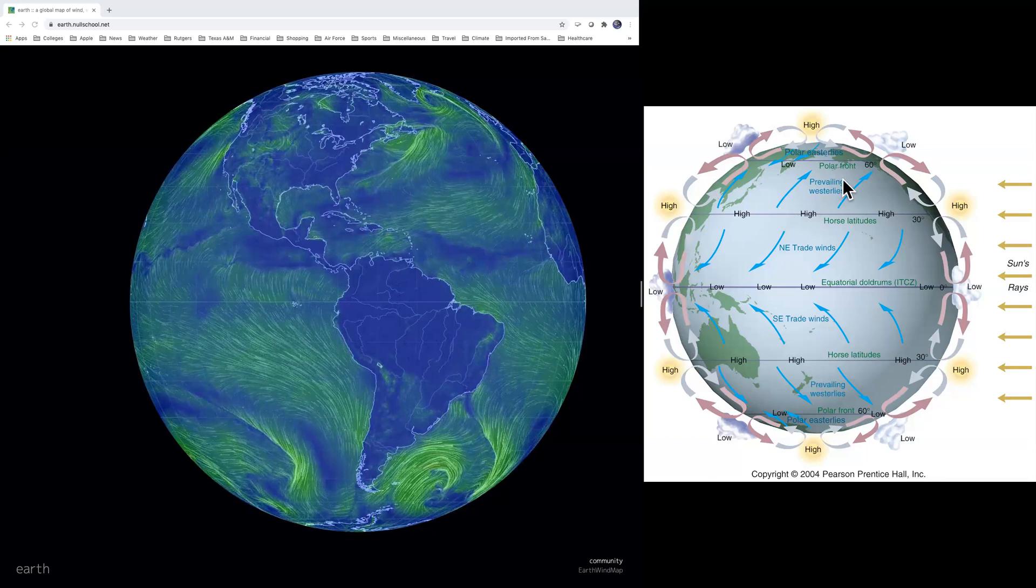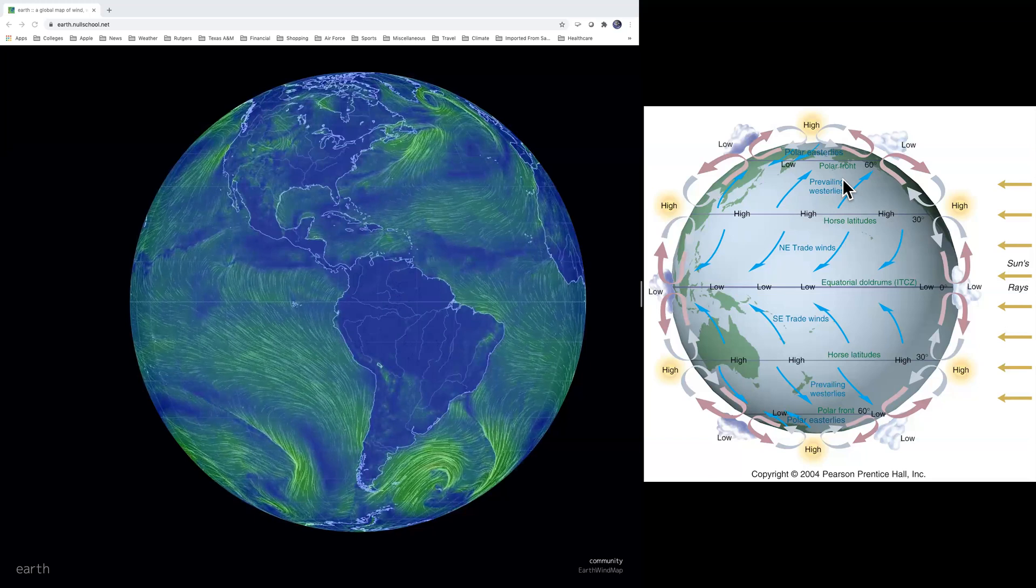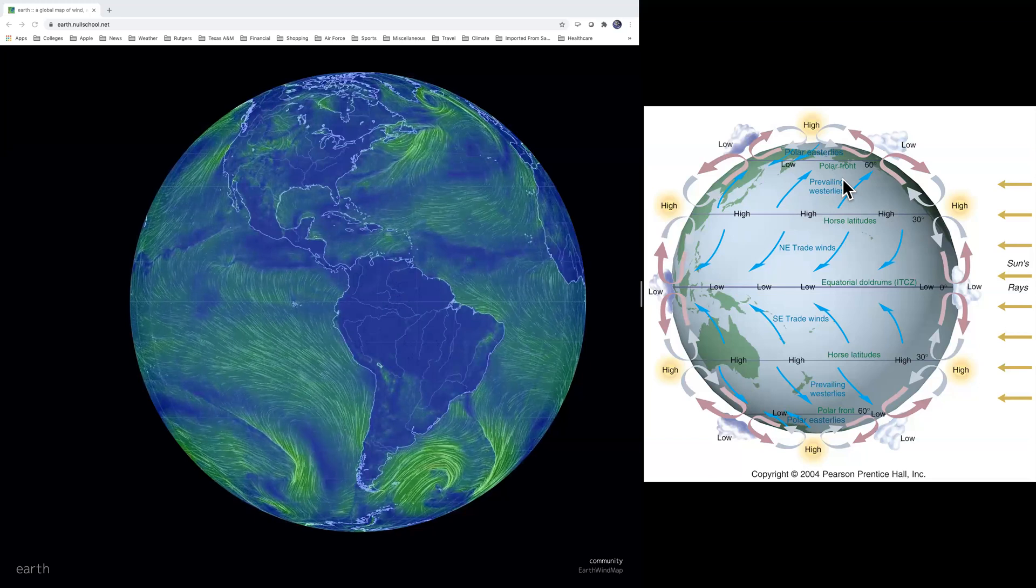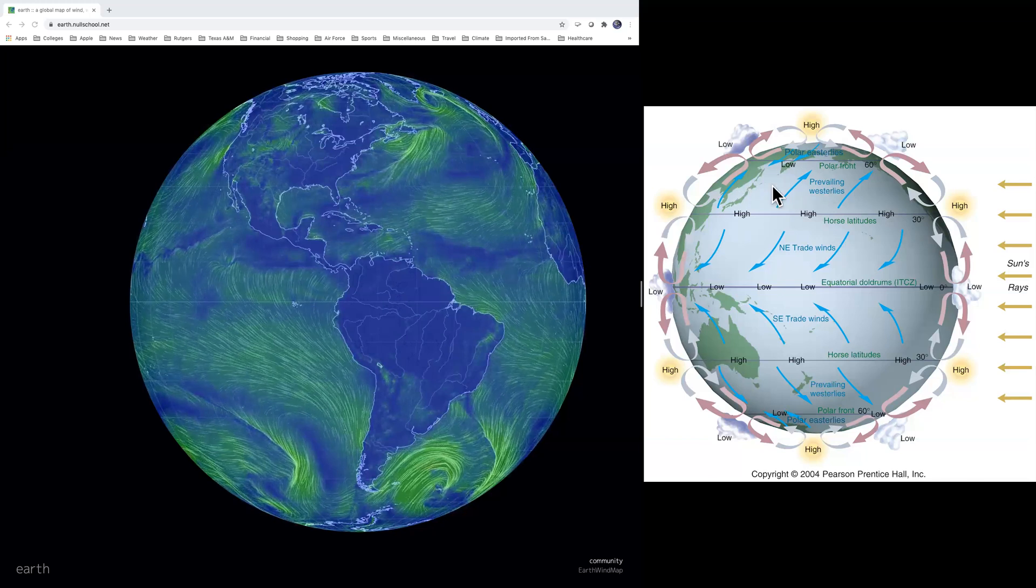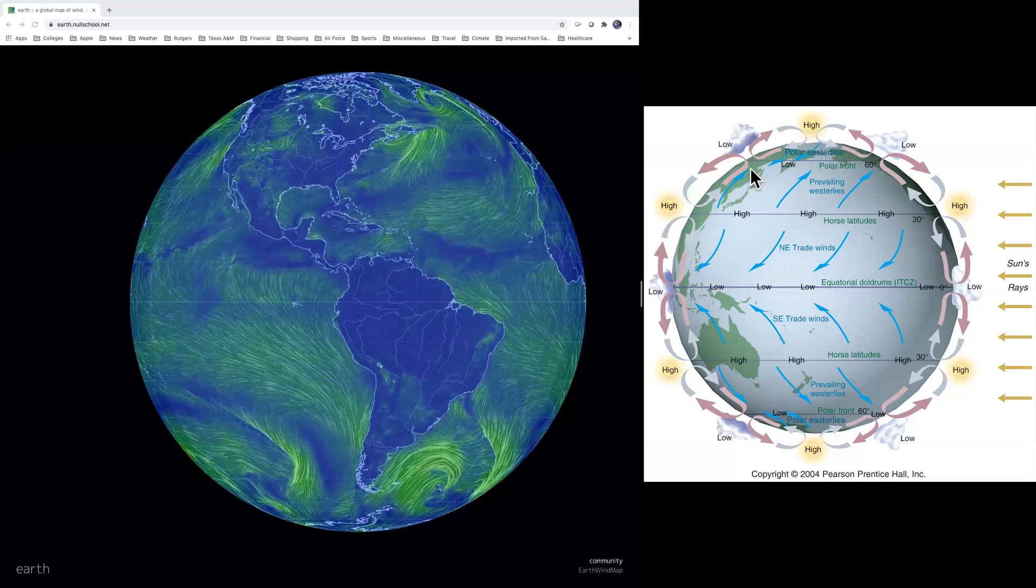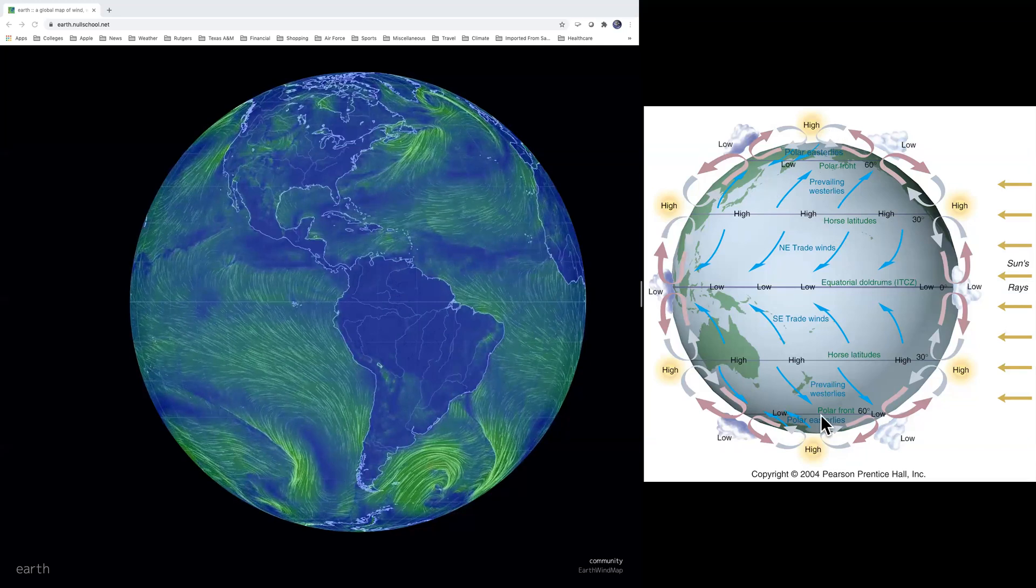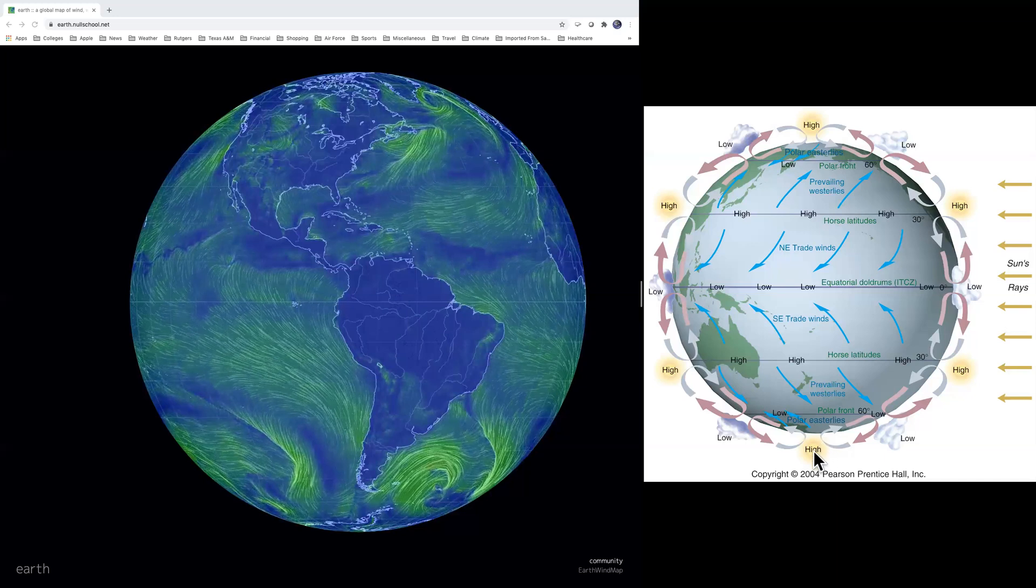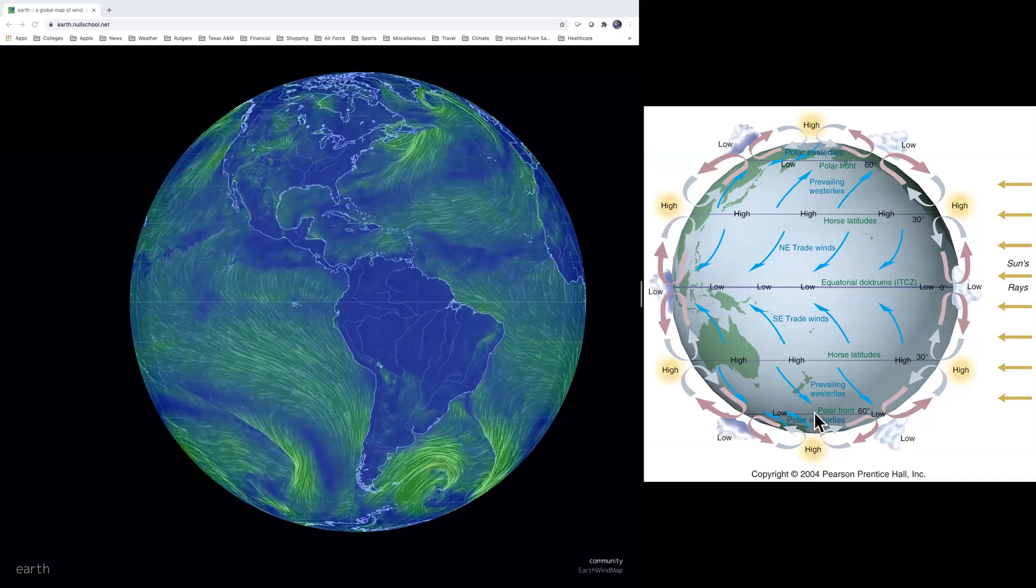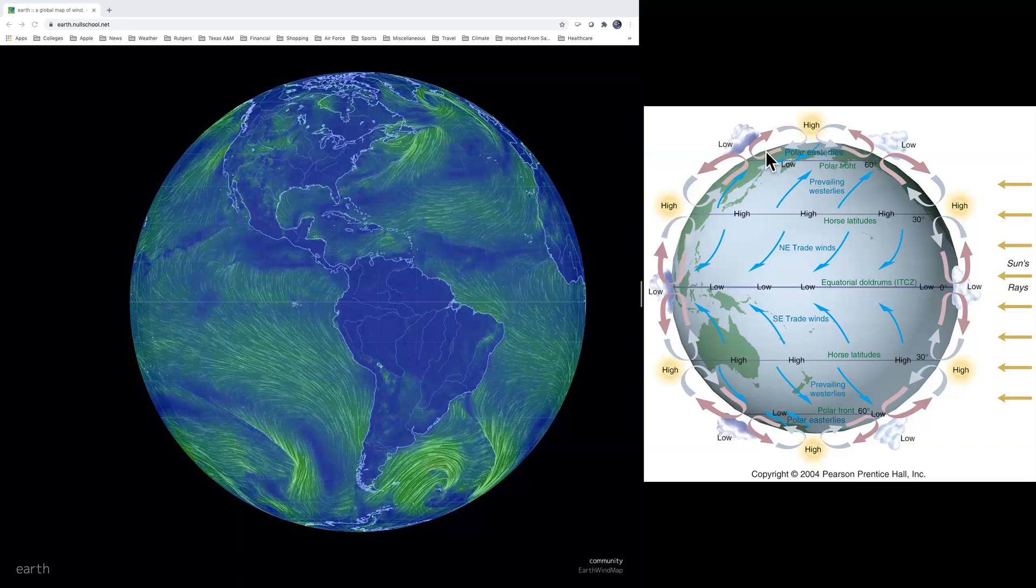These are the horse latitudes or subtropical high pressure belts. And out of that, you have the westerlies. So in places like New York and Colorado and Illinois and Northern California, you find yourselves in the prevailing westerlies. At the very top and very southern part of the earth, you have the poles and high pressure there. And you have polar easterlies, which collide with the westerlies, creating another zone of low pressure.